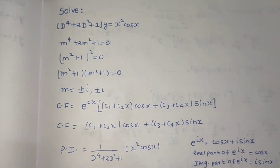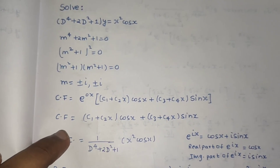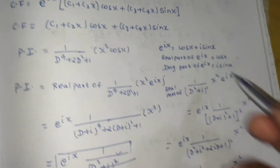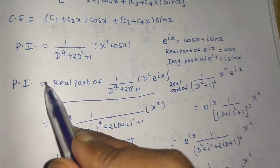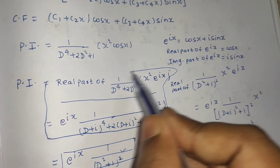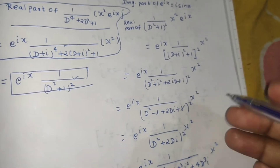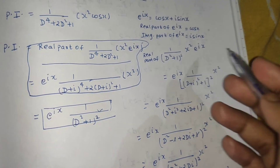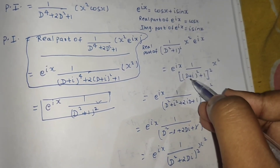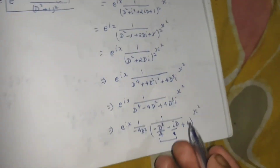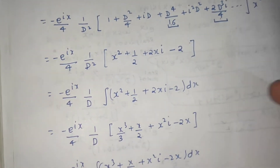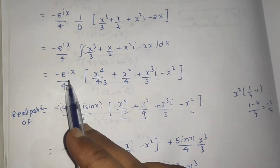To recap: first, the complementary function used the repeated complex root case. Then for the particular integral, instead of working directly with cos x, we solved for the real part of e^(ix), applied the e^(ax)·v rule to replace D by (D + i), then used the x^n technique.